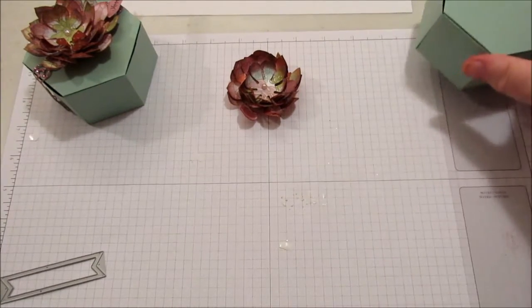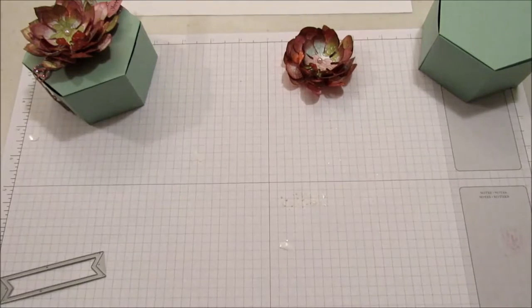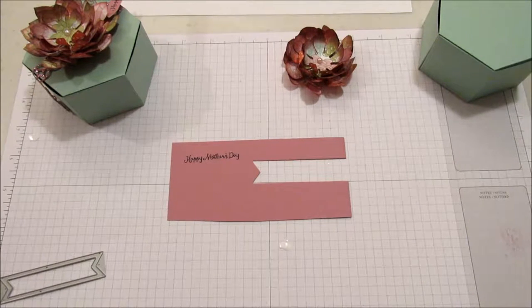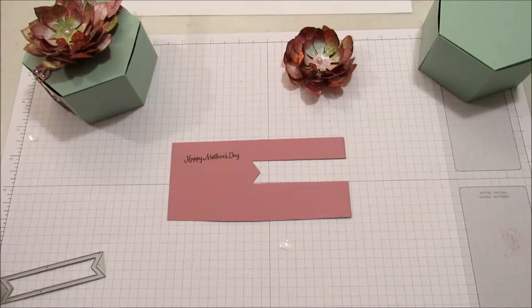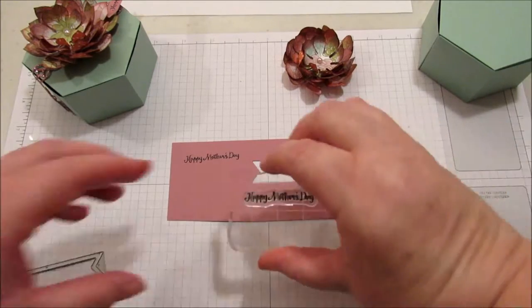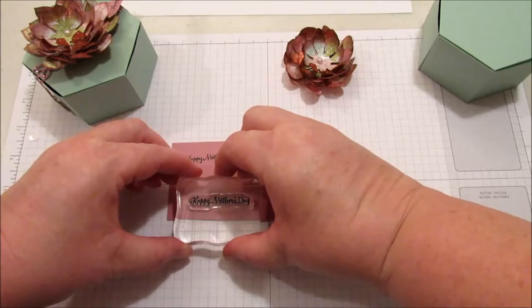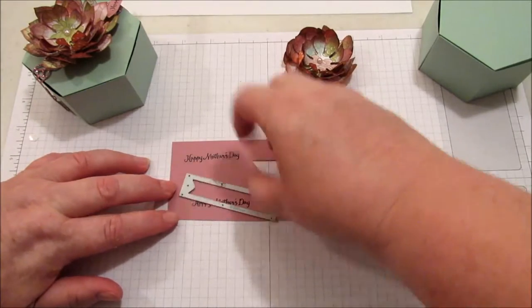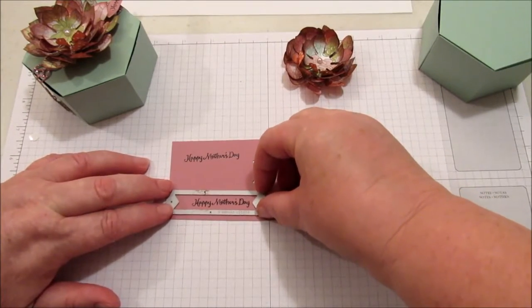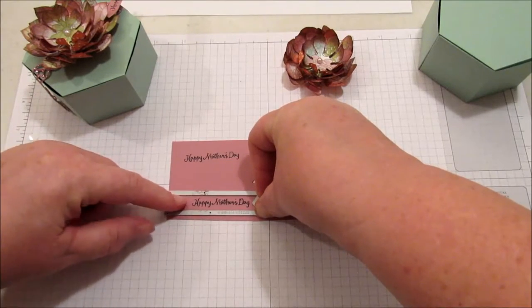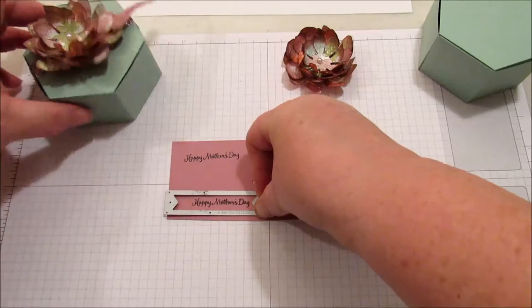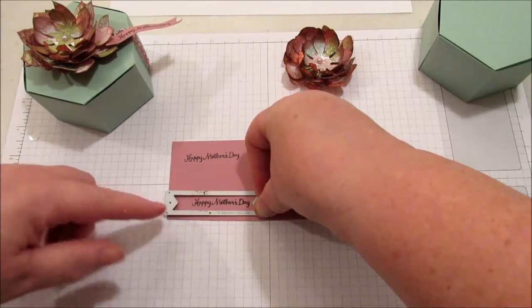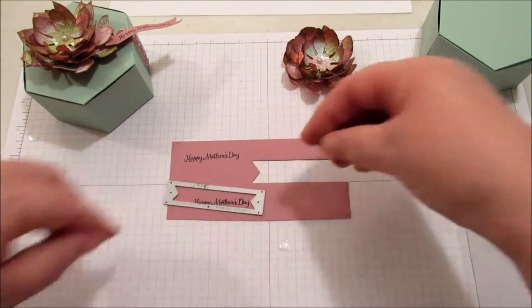While that's drying, we're going to go ahead and stamp our sentiment. So I have the extra Sweet Sugar Plum paper. And I'm just doing this sentiment in the Memento ink. And again, I told you it was a Happy Mother's Day. So now I'm going to, now what I'm going to do, I didn't do it on that one, but on this one, I'm going to leave a little more space over here to hook it underneath the flower. This one I ended up putting underneath the leaves so you could see that it says Happy Mother's Day. But this time I'm going to do it so that I had more room to tuck it underneath and you could still read it.